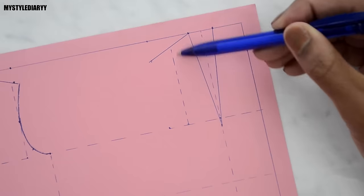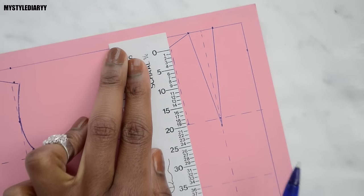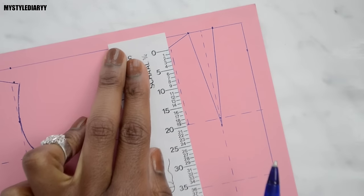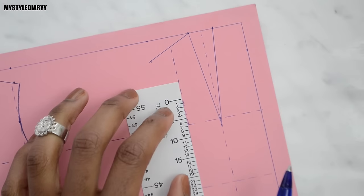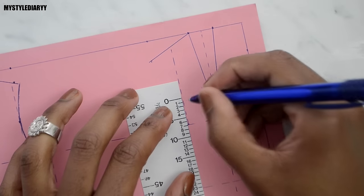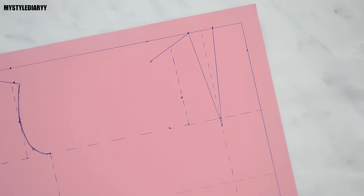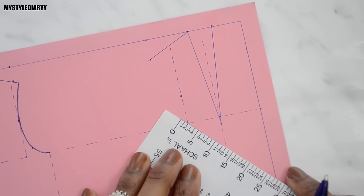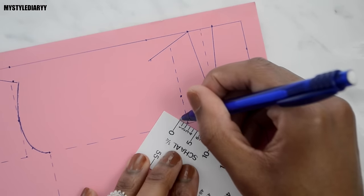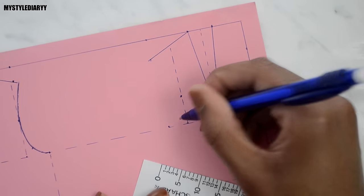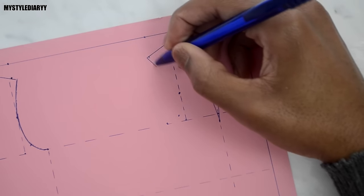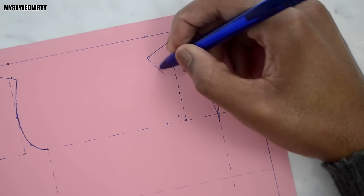Measure down one third of the armhole depth and mark a point. Mark a new point by extending two centimeters at a 45 degree angle. Draw now the armhole by connecting all the points with the French curve.